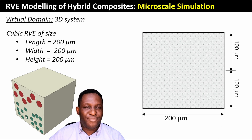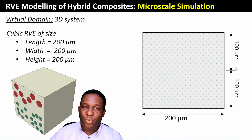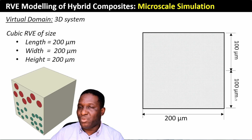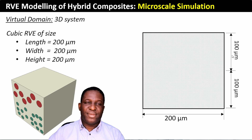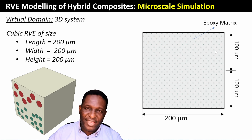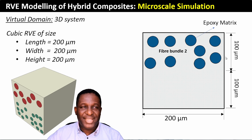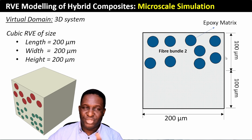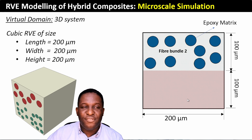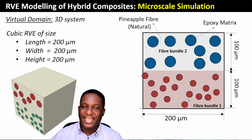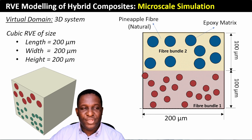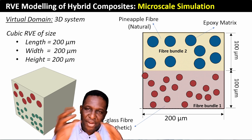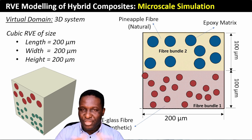Looking at the model from the side, it's 200 by 200 microns, equally divided — the first layer being 100 microns and the second layer being another 100 microns. Everything is made of an epoxy matrix; fiber bundle one on top is made of pineapple fiber and the second fiber bundle is made of an e-glass fiber system. It's a microscale representative volume element of the problem.